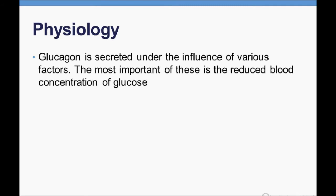Glucagon is secreted under the influence of various factors. The most important of these is the reduced blood glucose concentration. So whenever there is a decrease in glucose in the body, glucagon is stimulated. What is the function of glucagon? To increase the blood glucose level.